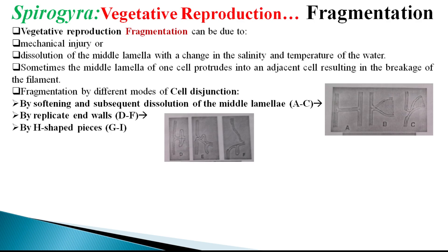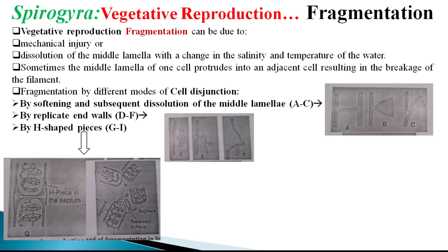Some species develop H-shaped pieces — for example, Spirogyra colligata, a species in which colligate or H-shaped septa exist. In these cases, the end wall of the adjacent cell, as seen in diagram G, possesses the colligate or H-shaped form of septum, making fragmentation relatively simple.